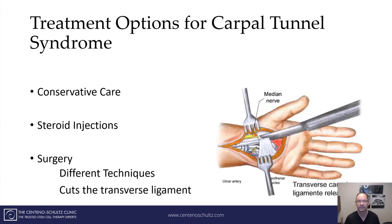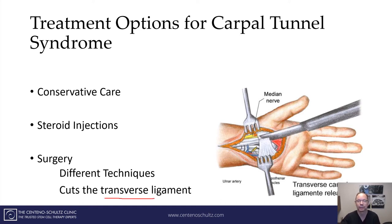Treatment options for carpal tunnel include conservative therapy with rest, non-steroidal anti-inflammatory medications, and often a splint at night. When these don't work, many doctors refer patients for a steroid injection — but while it's an anti-inflammatory, it can be toxic. Then there's surgery, whose goal is to release the compression. There are many different techniques, and they all involve cutting the transverse carpal ligament, which is the roof of the carpal tunnel.